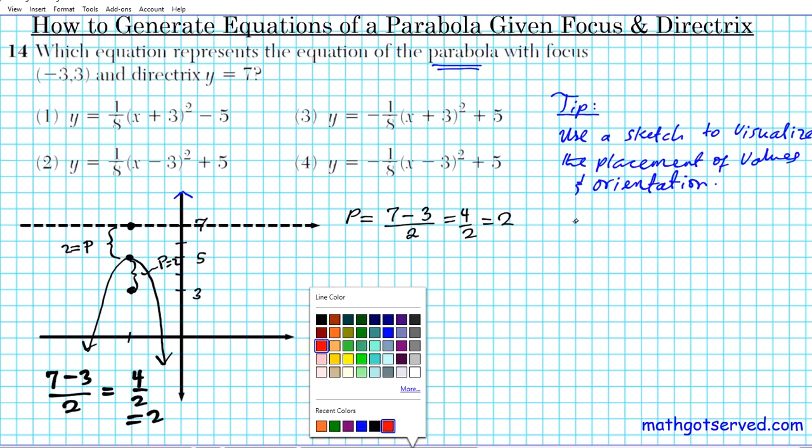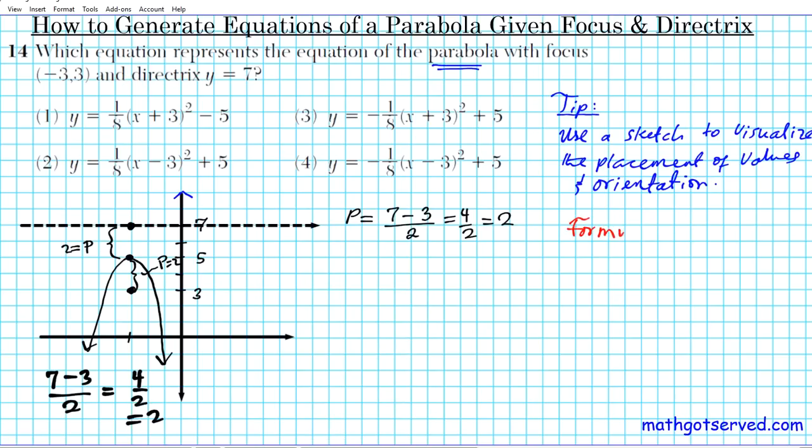Now to finish this problem off, we need the formula for the parabola with this kind of orientation. So the formula for a parabola opening up and down is y equals 1 over 4p times (x - h)² plus k.